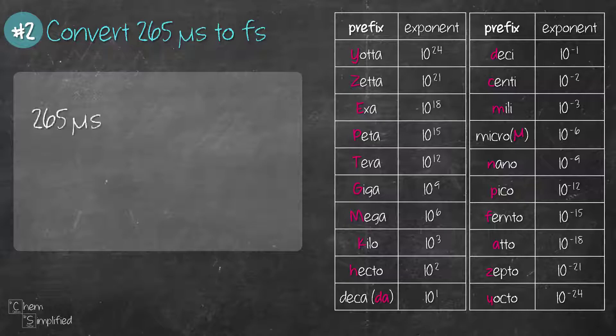We start with 265 microseconds and we place microsecond at the bottom so that they can cancel out, and then we place second on the top. From the prefix table, the exponent value for micro is 10 to the power of negative 6. So that means 1 micro is 10 to the negative 6. Now that we have it in seconds, we're going to continue with the conversion to get to femtoseconds.